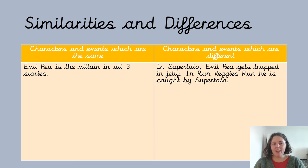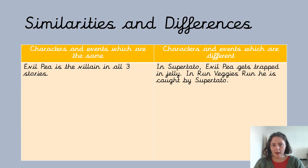So this is our main job for today. In your home learning pack and in the files on Teams is a sheet about similarities and differences, and it looks a little bit like the one here on this slide. On one side it says characters and events which are the same, and on the other side characters and events which are different. All of those ideas that you've just talked about, we're going to write them on this sheet, and we need to make sure we put them in the correct box. Similarities, remember, are things that are the same.